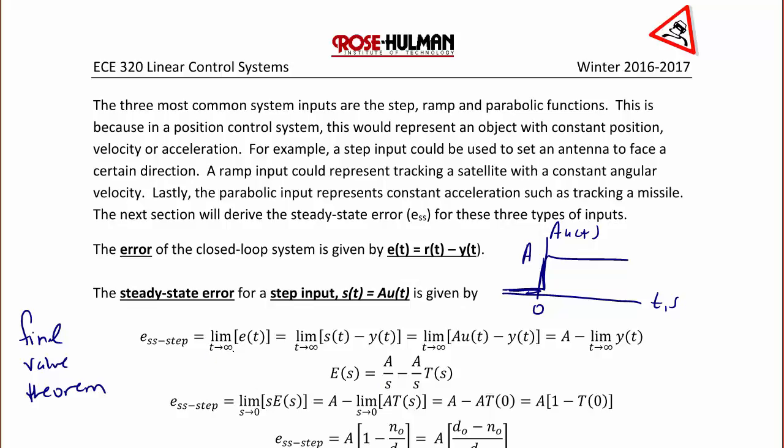From the final value theorem, the limit as t approaches infinity of e(t), or the limit as t approaches infinity of s(t) - y(t), would be equal to the limit as t approaches infinity of Au(t) - y(t), or A minus the limit as t approaches infinity of y(t).